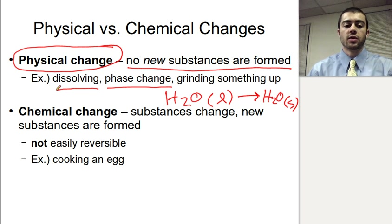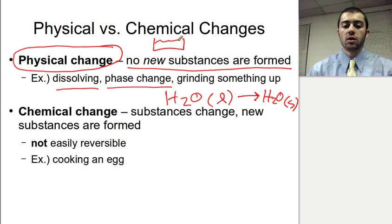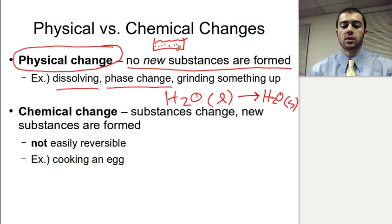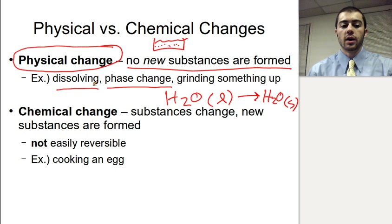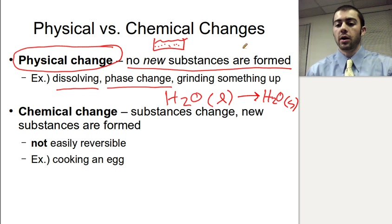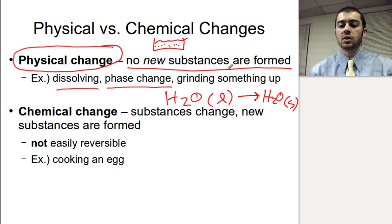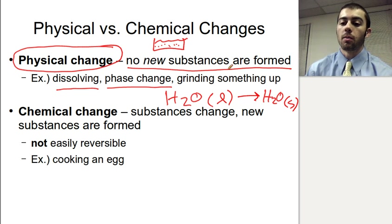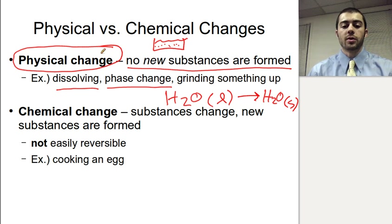Another example of a physical change would be dissolving. If we take salt water, which is just a whole bunch of salt dissolved into water, that's going to be a physical change because it's still just water and salt — they're just mixed together. If we grind a pill into a powder, that's still the same pill substance, just ground up into a powdered form. So again, if we're not forming new substances, that's going to be a physical change.